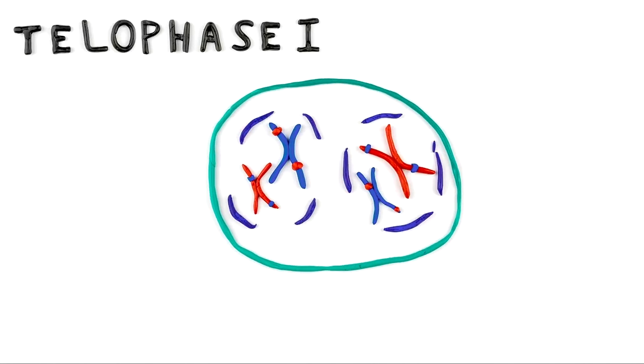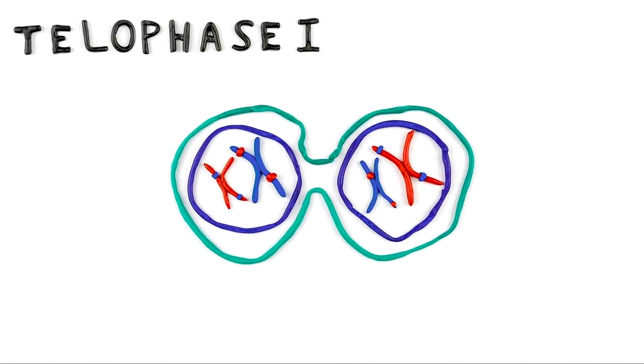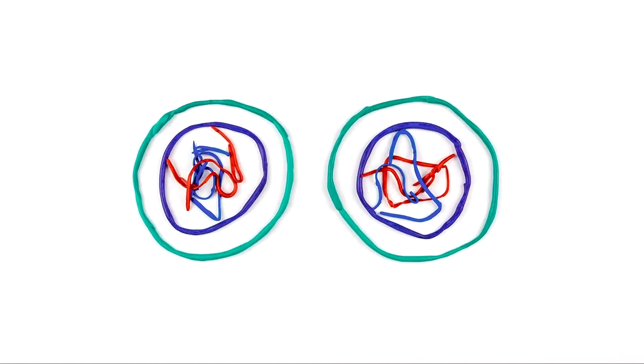In telophase I, two nuclei form, and then the cell splits into two cells, each with 23 double-stranded chromosomes.